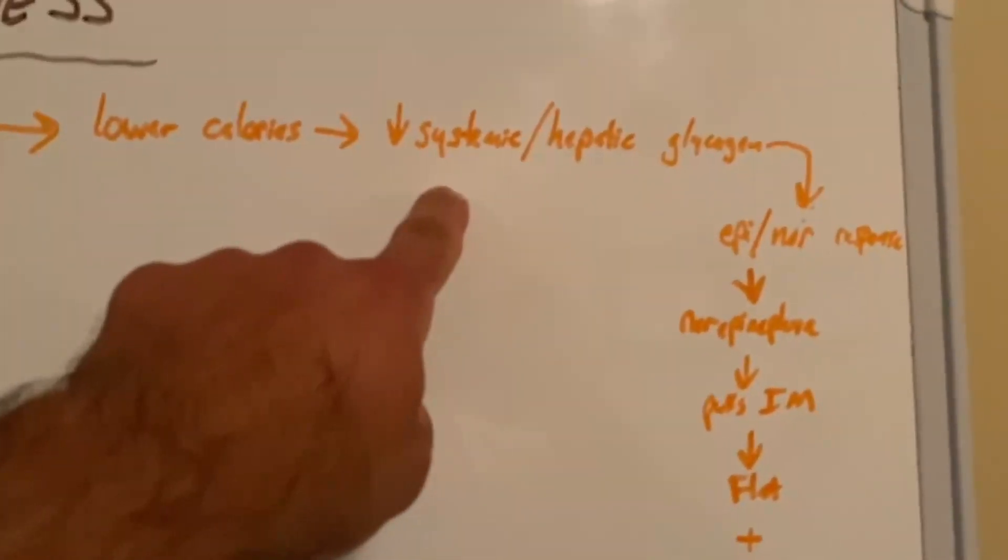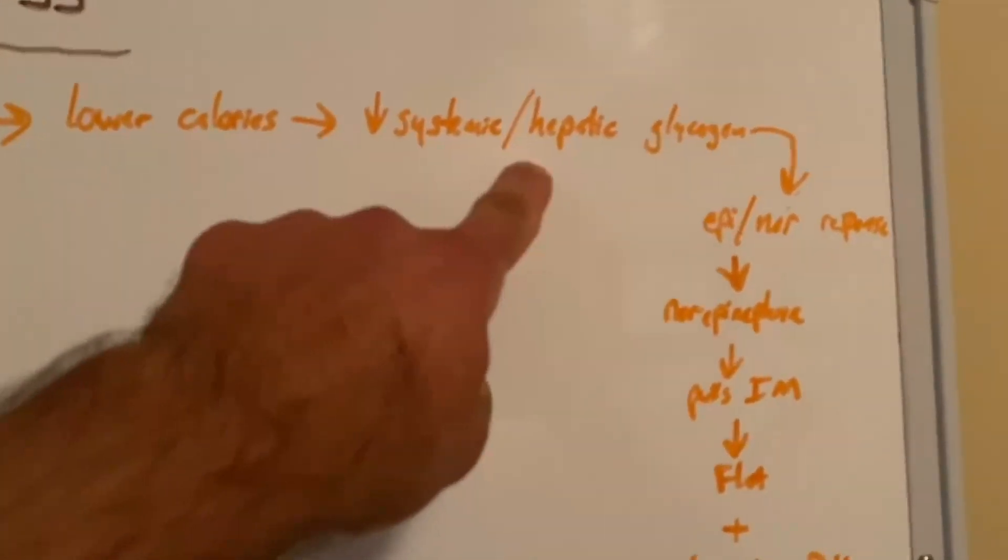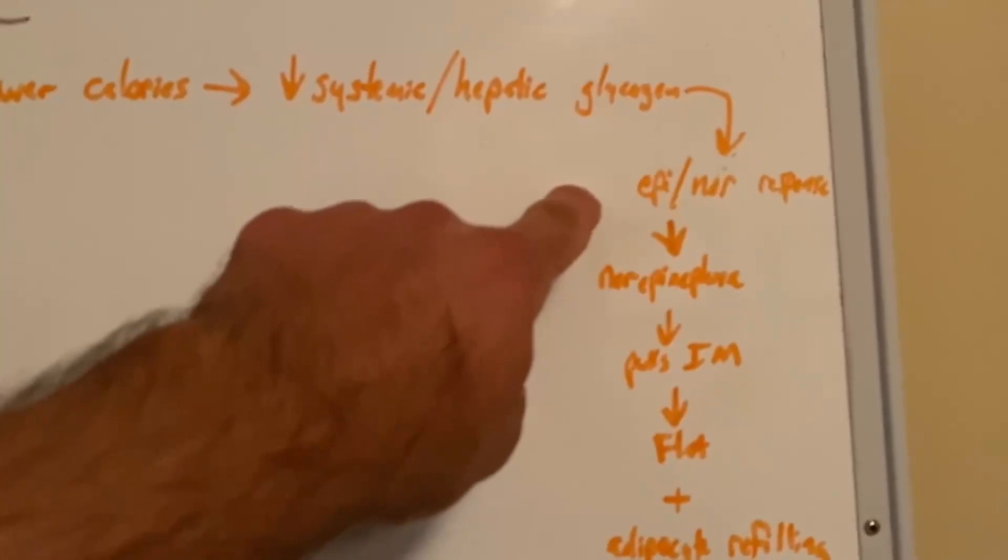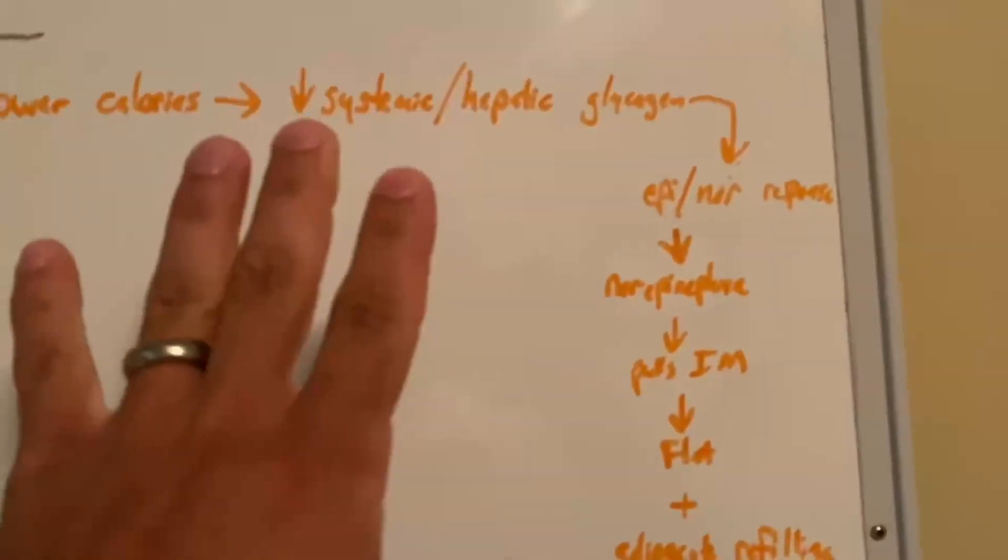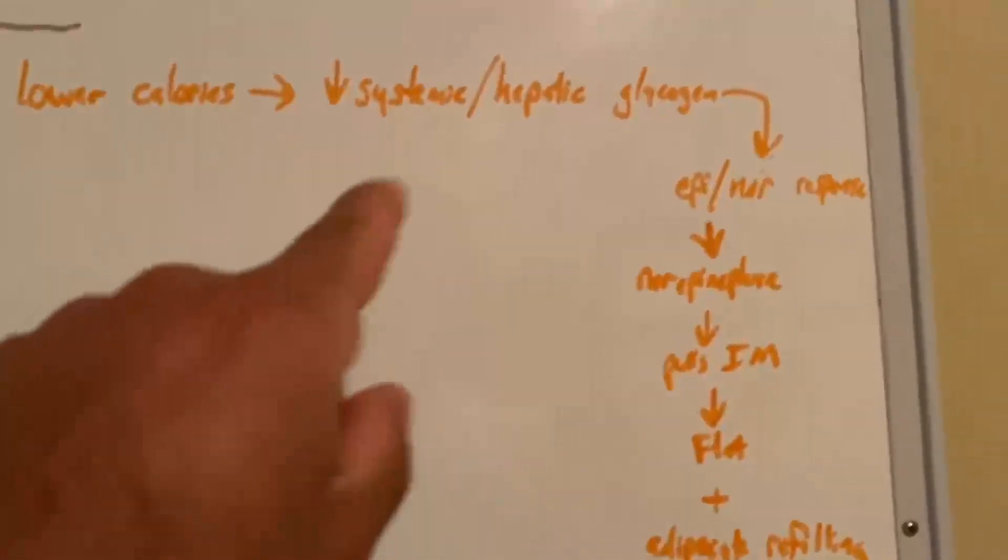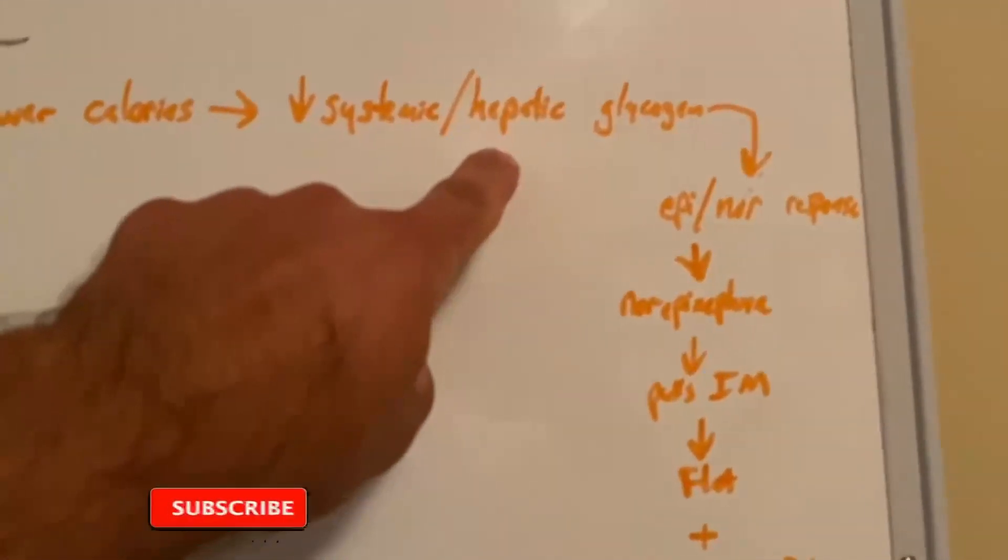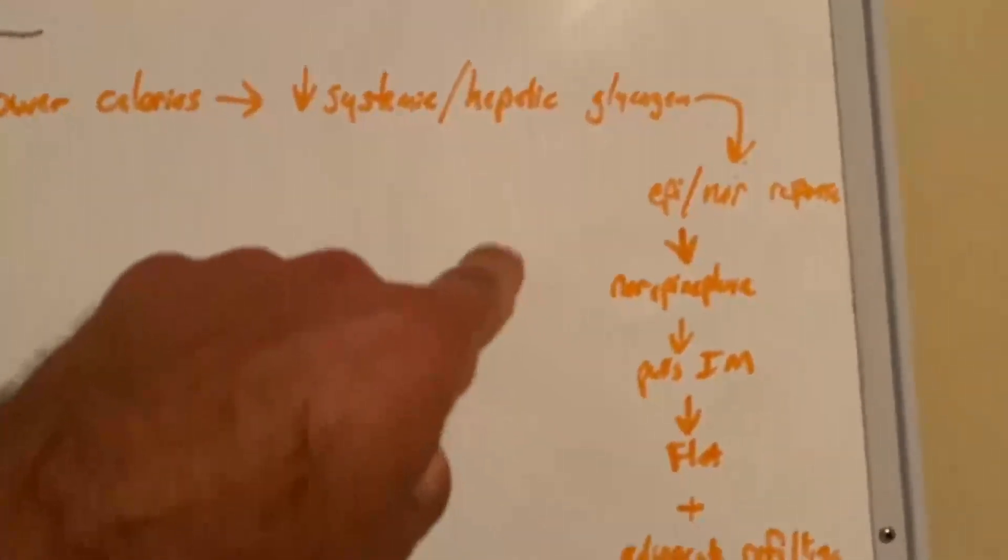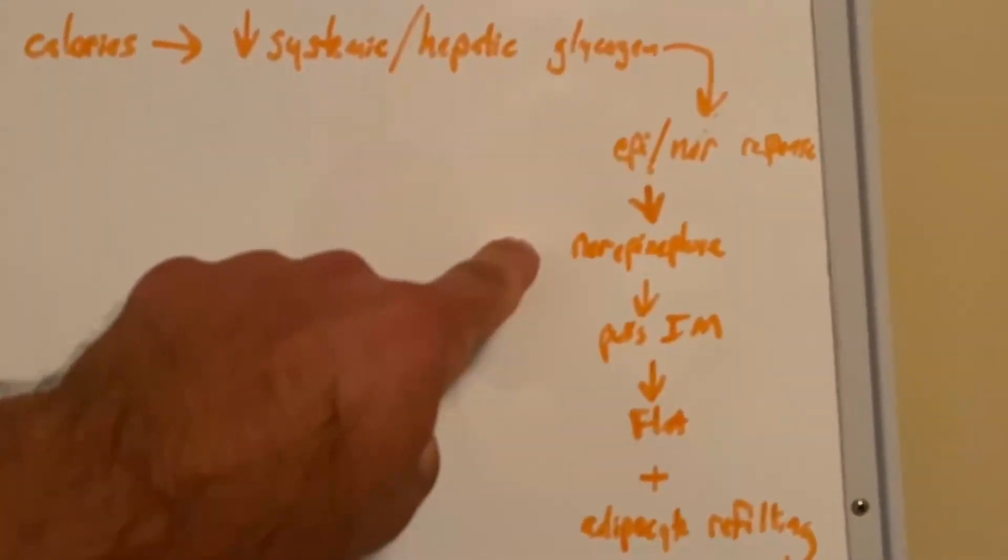We start our diet, we begin lowering calories, we see a systemic change in glucose and glycogen, mainly intramuscular and hepatic, so over in your liver. What happens there is that obviously triggers an epinephrine norepinephrine response. If we focus more on the lipolytic beta-oxidative side of this equation, we're looking more at that hepatic glycogen change.